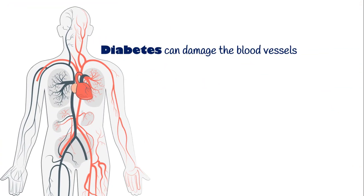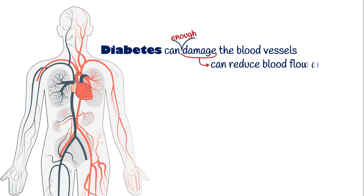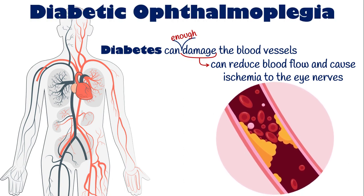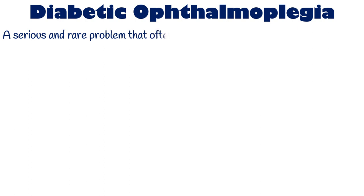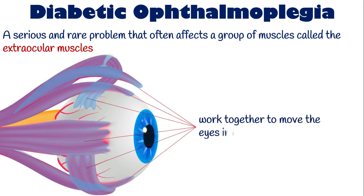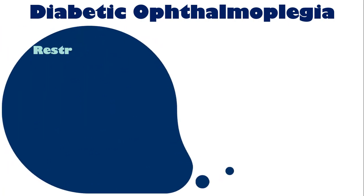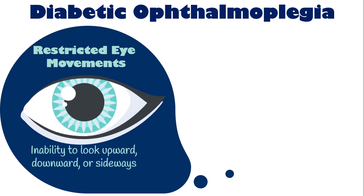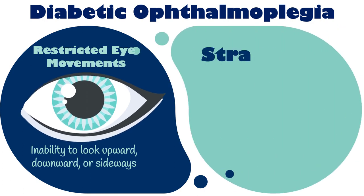Diabetes can damage the blood vessels that supply the peripheral nerves responsible for eye movement. Enough damage can reduce blood flow and cause ischemia to the eye nerves, resulting in weakness or paralysis of the eye muscles known as ophthalmoplegia. Diabetic ophthalmoplegia is a serious and rare problem that often affects a group of muscles called the extraocular muscles — the seven muscles surrounding each eye that work together to move the eyes in different directions. Extraocular muscle ophthalmoplegia can result in restricted eye movements, such as the inability to look upward, downward, or sideways. Some patients may develop misalignment of the eyes, leading to strabismus.